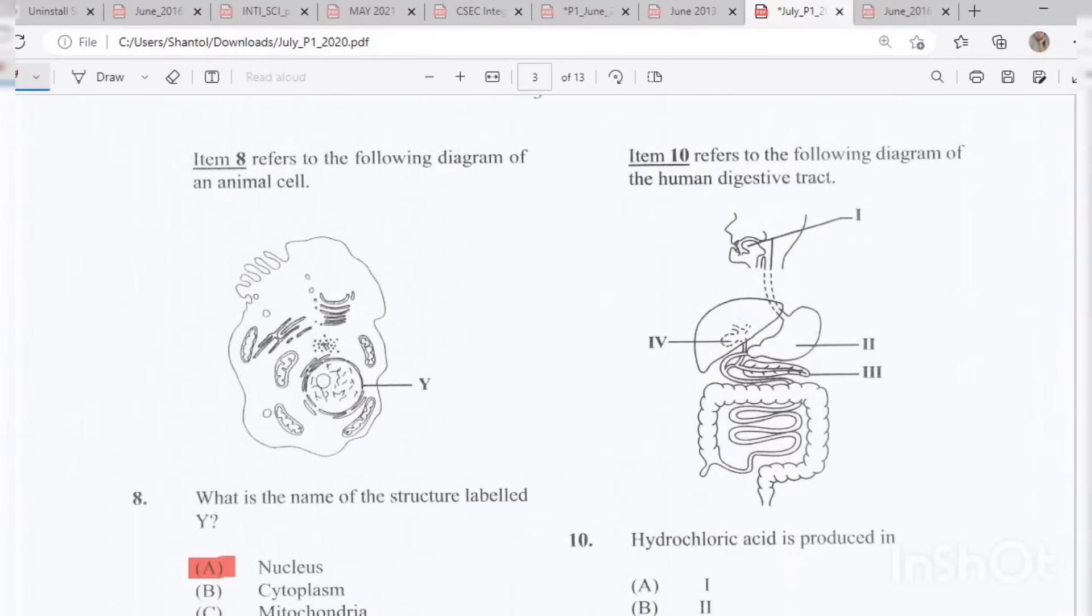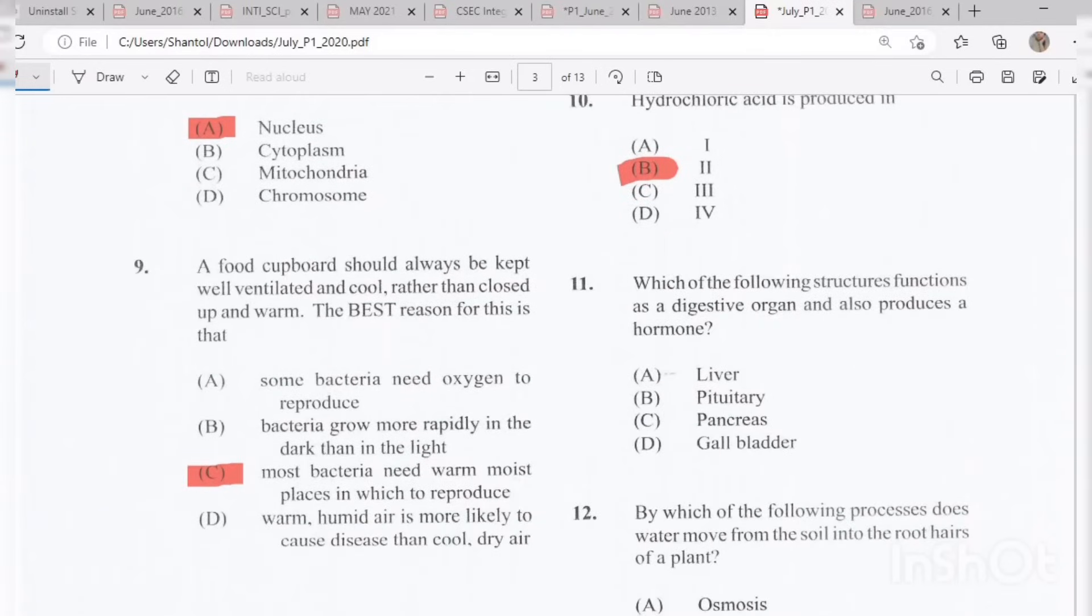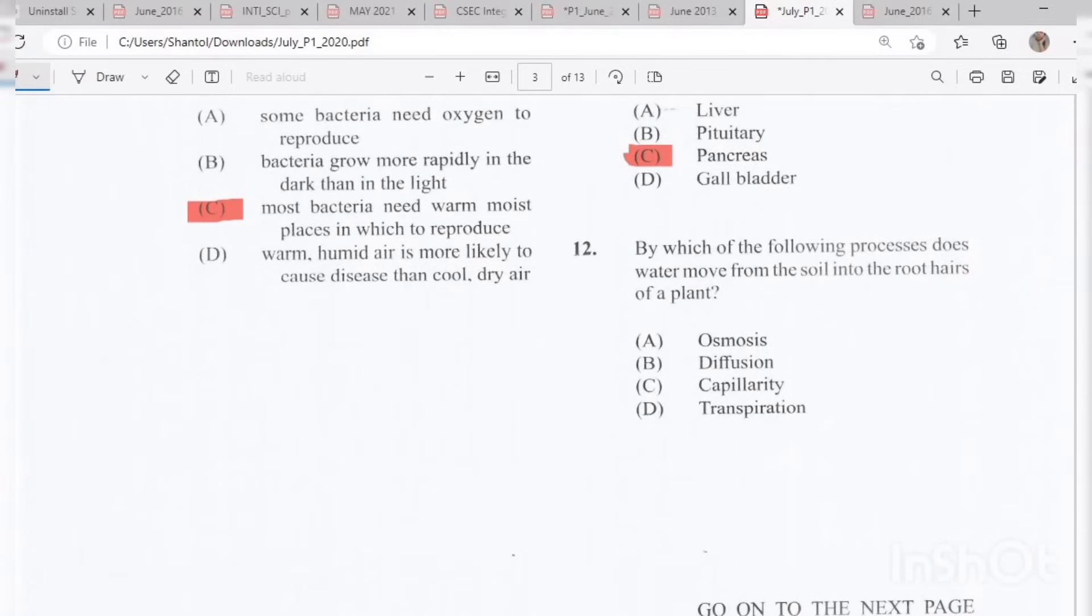Number 10: Item 10 refers to the following diagram of the human digestive tract. Hydrochloric acid is produced in B, number 2, and 2 would be the stomach. Number 11: Which of the following structures functions as a digestive organ and also produces a hormone? The answer would be C, the pancreas because it produces insulin. Number 12: By which of the following processes does water move from the soil into the root hairs of a plant? The answer would be A, osmosis.